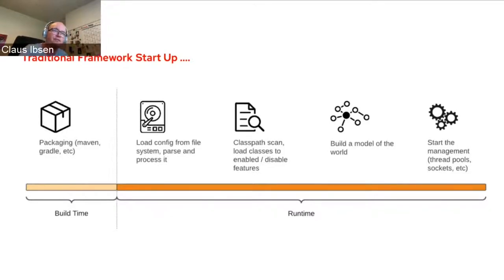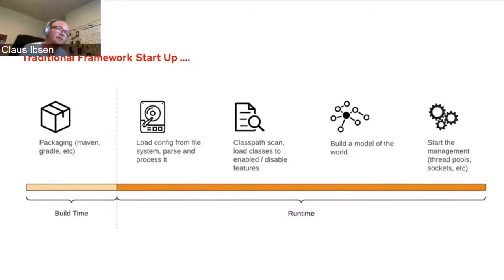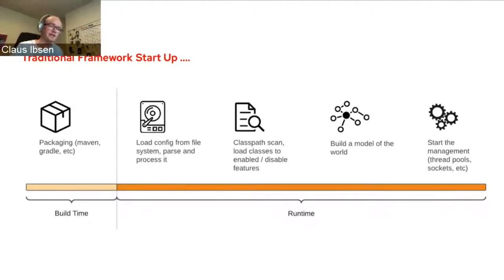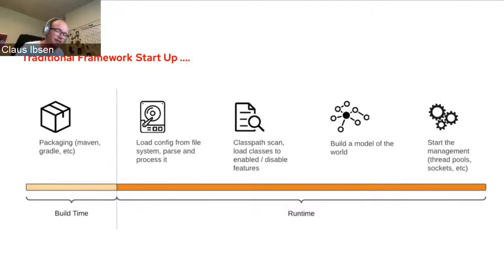Before Quarkus, the traditional way of starting a JVM Java application was to compile and package at build time, then at runtime take that bytecode and run it. There's a bootstrap process at runtime where you load configuration files, pass JVM system options, do classpath scanning to load additional classes — like Spring Boot starters — and build up the model of what's enabled, initialize many things, start threads, open sockets. That's quite a lengthy process from the JVM point of view.